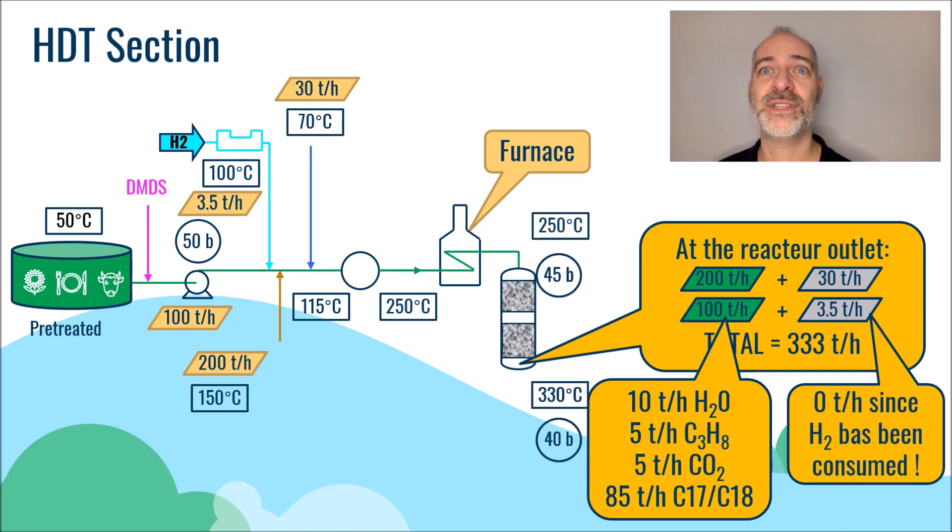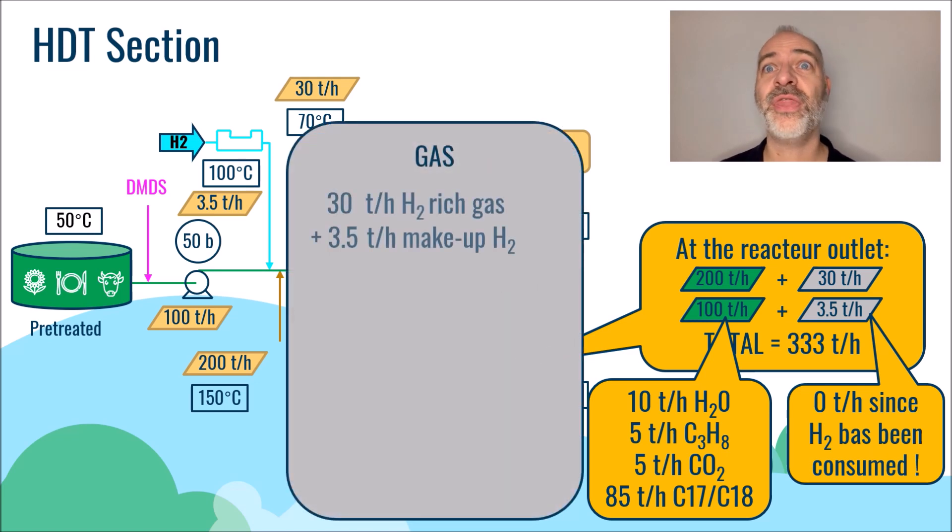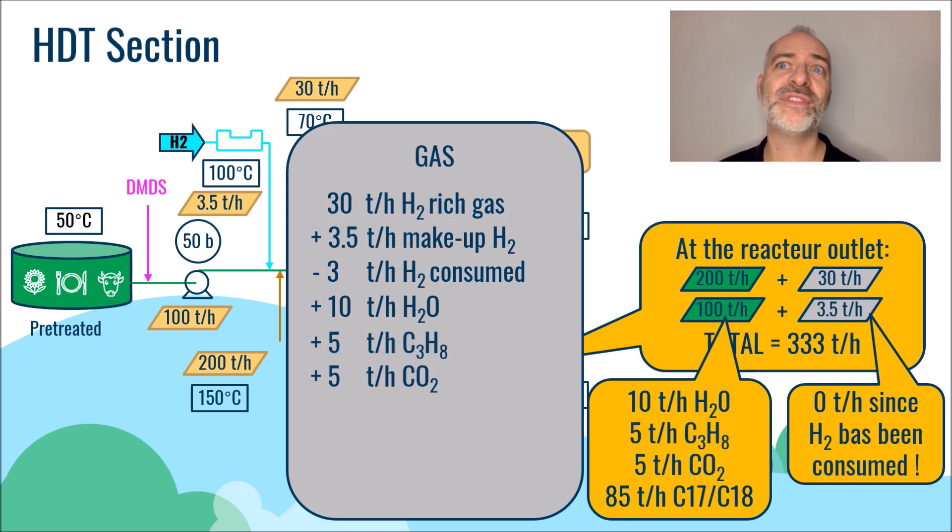We had 300 tons per hour of liquid and 33 tons per hour of gas at the reactor inlet. We now have, in the gas phase, the initial 30 tons per hour of gas, minus 3 tons per hour of hydrogen consumed, but plus 10 tons per hour of water in vapor form, plus 5 tons per hour of propane vaporized, plus 5 tons per hour of CO2, for a total of 50 tons per hour of gas.